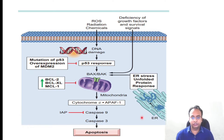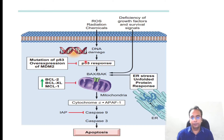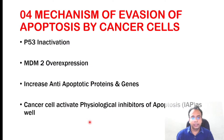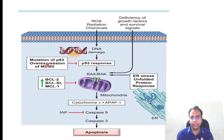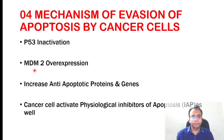After understanding this diagram of the intrinsic pathway of apoptosis, you can easily understand how cancer cells evade the apoptosis process. The first mechanism by which cancer cells evade apoptosis is p53 inactivation. p53 is a tumor suppressor gene — if it is mutated or inactivated, p53 cannot perform DNA repair or induce apoptosis. The second mechanism is MDM2 overexpression, which can be seen in melanoma. MDM2 normally prevents p53 activity, so if MDM2 is overexpressed it blocks p53 and apoptosis will not be induced even when there is DNA damage.